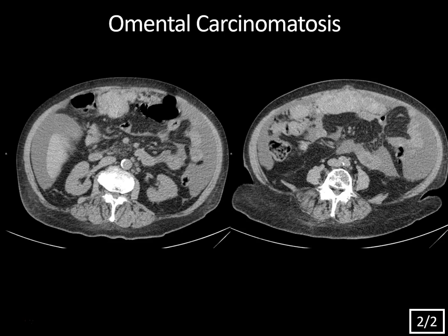This is a typical metastatic pattern for this type of ovarian cancer. Mucinous cystadenocarcinoma will tend to metastasize with the pseudomyxoma peritonei pattern, where you might get scalloping against the liver, but you can also get carcinomatosis with that diagnosis as well.